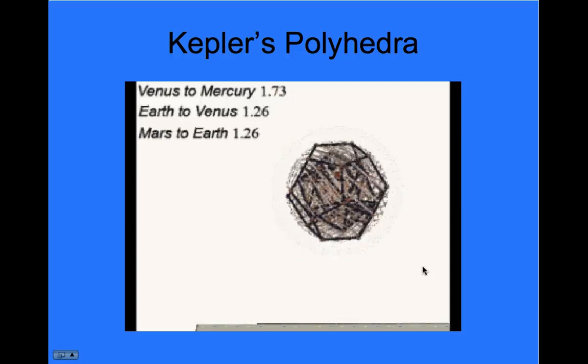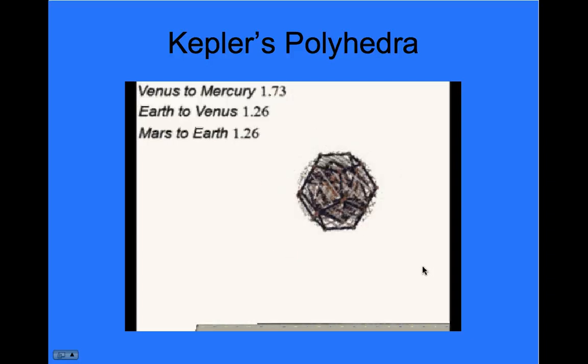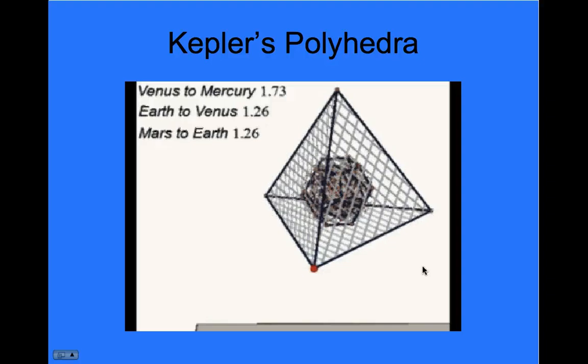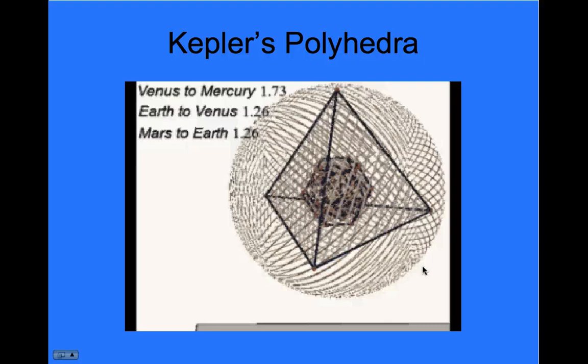Now, if we shrink this all, which we need to, for Jupiter, we have to stick a tetrahedron around there, and put a sphere around that tetrahedron, and we get the ratio of the orbits of Jupiter to Mars.